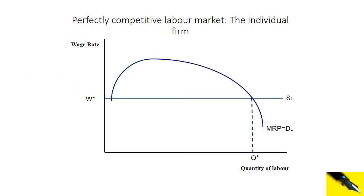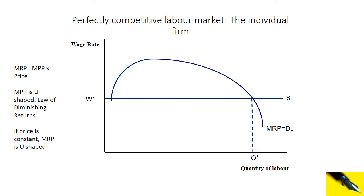This is the perfectly competitive labour market from the point of view of the individual firm — hopefully revision. We've got a U-shaped MRP curve, which is the demand for labour. The MRP, the marginal revenue product, is the marginal physical product multiplied by the price of the good or service that the business is producing and selling. So MRP equals MPP times price. Because the marginal physical product curve is U-shaped, the marginal revenue product curve is also U-shaped.